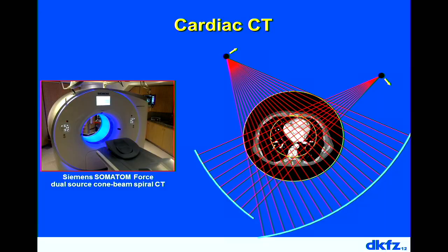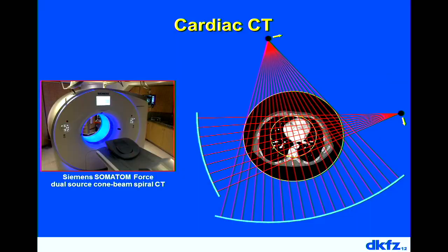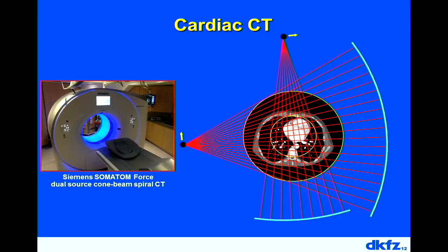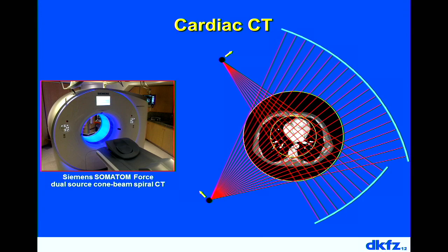In cardiac CT, one vendor has a special system with two X-ray sources and two detectors. To acquire data for a CT image, 180 degrees of rotation is needed. For a single X-ray tube system, the scanner rotates 180 degrees; for a dual-source system, it only needs 90 degrees. So the temporal resolution achievable with a dual-source system is twice as high as with a single-source system — this is a dedicated cardiac CT system.